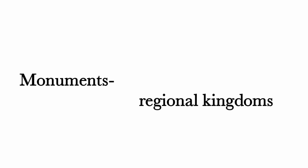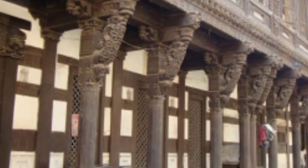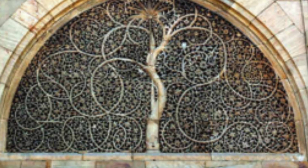Monuments of the regional kingdoms: The Indo-Islamic style of architecture influenced the regional kingdoms as well. Ahmad Shah of Gujarat founded Ahmedabad and decorated it with grand structures. The most famous among them is the Jami Masjid and Sidi Sayyid Masjid, the latter being famous for its beautifully carved jali screens.